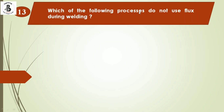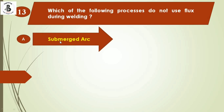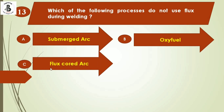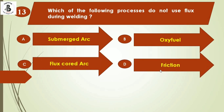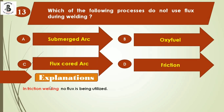The next question: which of the following processes does not use flux during welding? Option A: submerged arc, Option B: oxy-fuel, Option C: flux-cored arc, Option D: friction. In friction welding, no flux is used because it is a solid-state welding process. Heat is developed by friction between two rubbing surfaces, followed by application of pressure to complete the weld. The right answer is Option D.